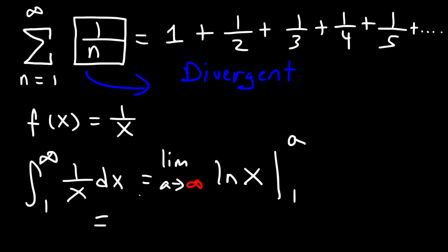And so this is going to be equal to the limit as a approaches infinity, the natural log of a, minus the natural log of 1. So the limit as a approaches infinity of ln a, what is that equal to? Well, the natural log of infinity is going to be a large number. That's still going to be infinity. And ln 1 is 0.